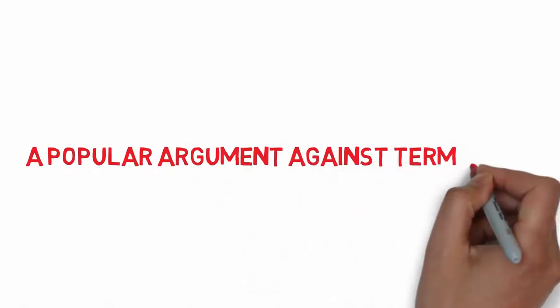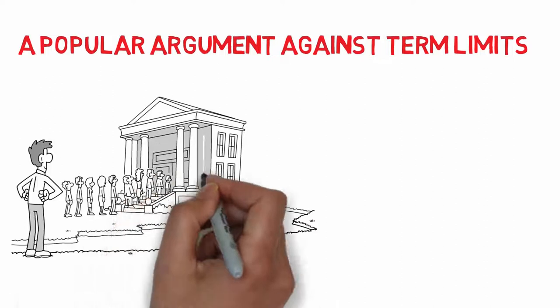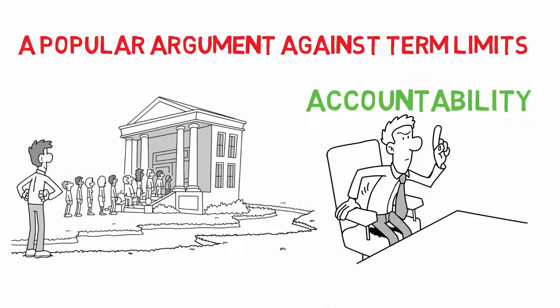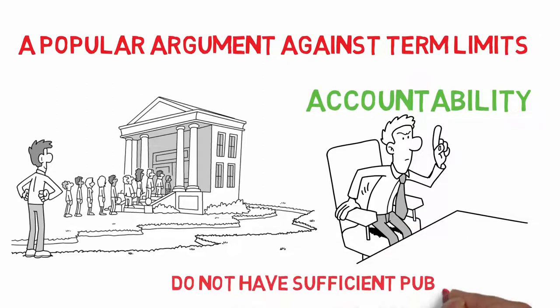Another argument against a sortition is also a popular argument against term limits, which we mentioned earlier, and that is that the concern about getting re-elected creates accountability, ensuring that there are consequences for making decisions that do not have sufficient public support.